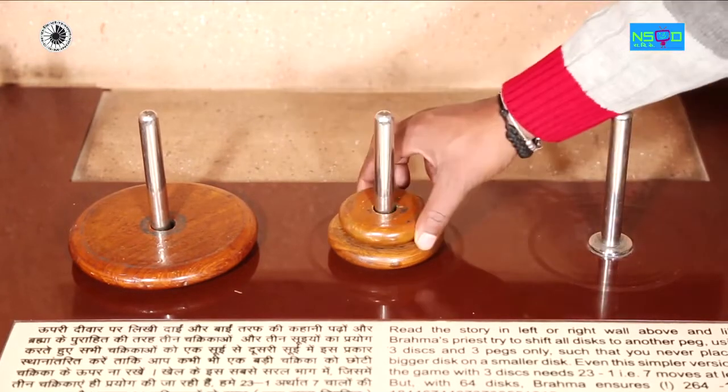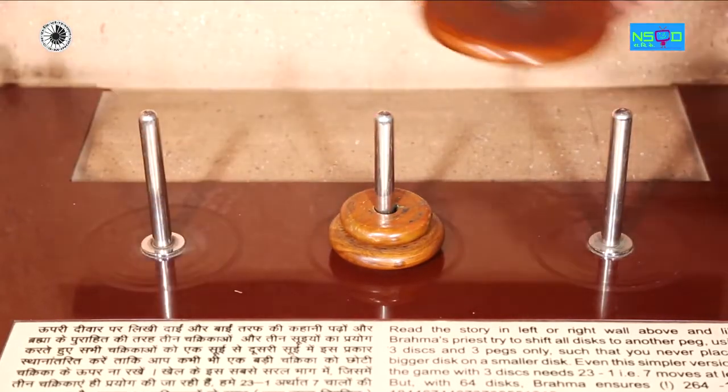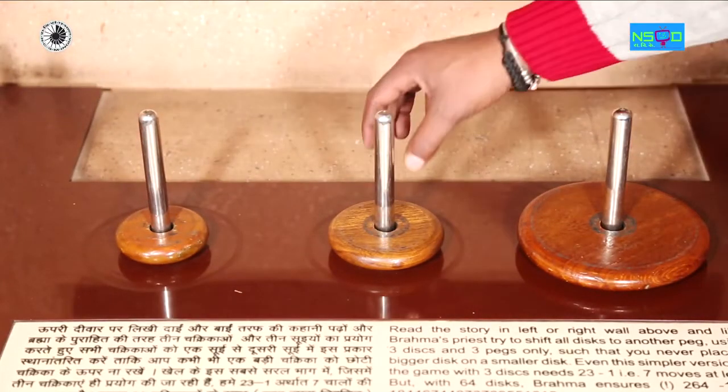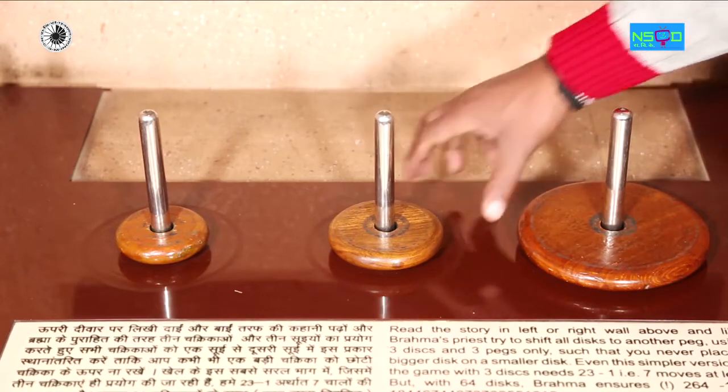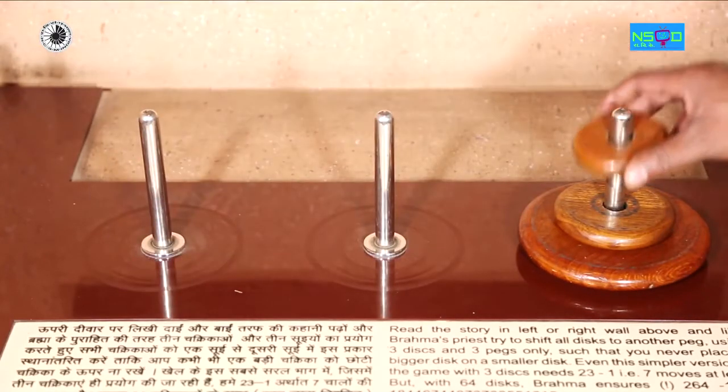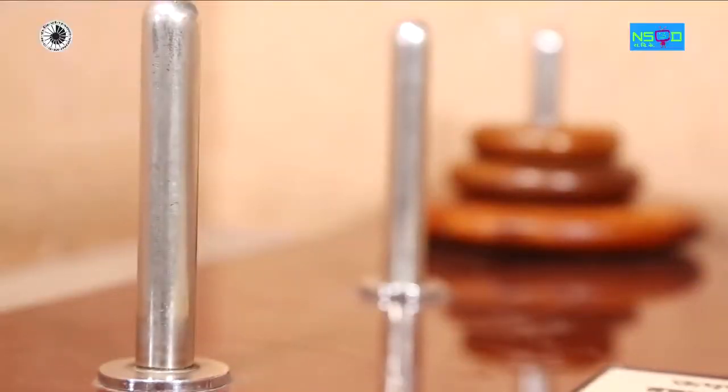But under certain conditions: One, only one disc can be picked in one move. Two, you may use the central peg. Three, a bigger disc cannot be placed on top of a smaller disc. Try it. The minimum number of moves required is established by a relation 2^n - 1, where n is the number of discs.